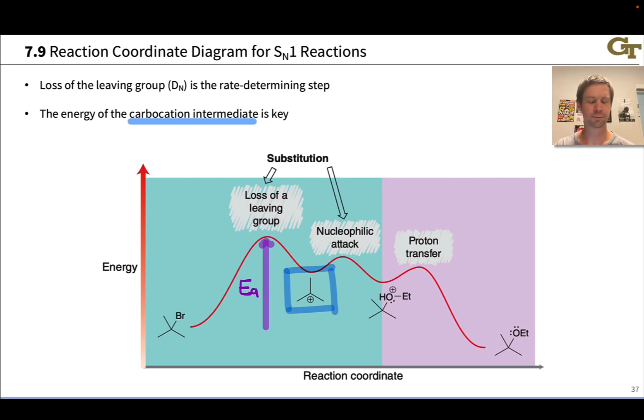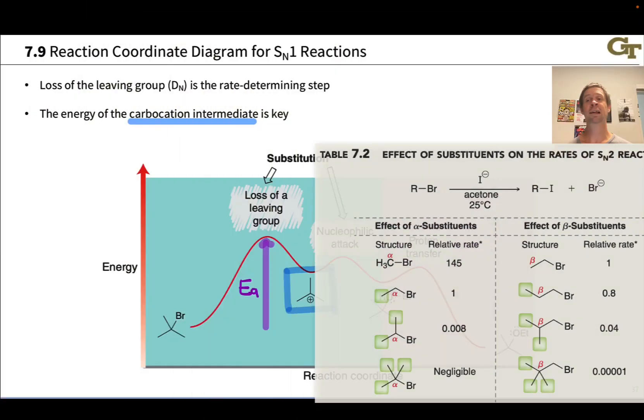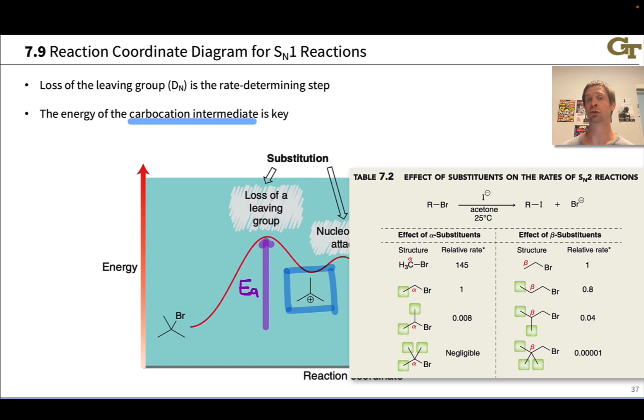The SN1 reaction involves a carbocation intermediate. Because carbocations are stabilized by additional alkyl substitution, more heavily substituted alkyl halides, tertiary alkyl halides, tend to engage in SN1 reactions, while less substituted alkyl halides, which are less sterically hindered, tend to engage in SN2 substitutions, as they can't form carbocations that are energetically accessible under the reaction conditions.